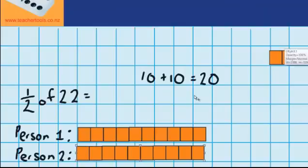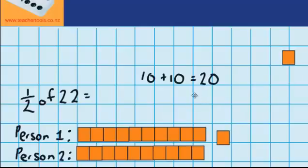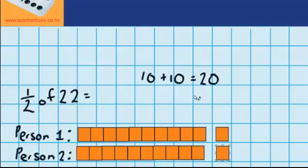Now you can see that leaves me with just 2 blocks up here, so it's easy for me to split those up. I'm going to give one block to person 1 and one block to person 2. So each person got 10 blocks and then one more block, so in total they got 11 blocks — so half of 22 is 11.